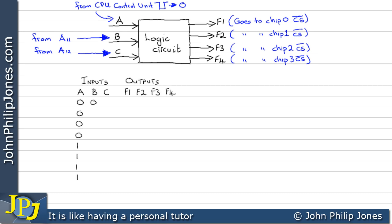Drawing out all possible input combinations: to select a chip requires one output to be 0 for a given combination and all others to be 1. For the first row, F1 is 0 and F2, F3, F4 are all 1. This means when A, B, and C are all 0, F1 is 0 and all other outputs are 1 — chip 0 is selected and all others are off. F1 is only 0 for this one combination; on all other occasions F1 must be 1.